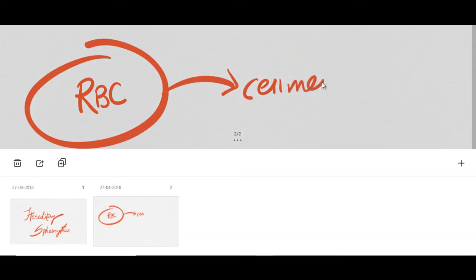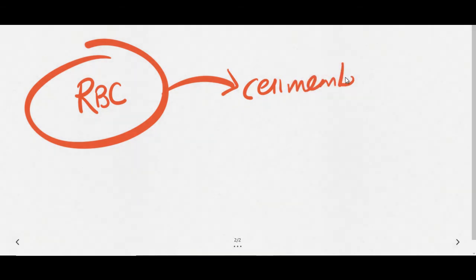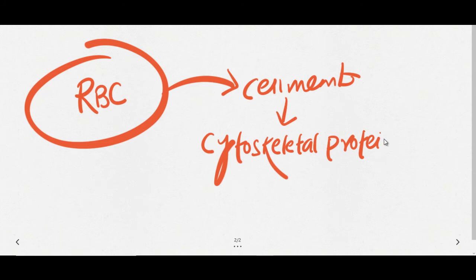RBCs have a cell membrane with a cytoskeleton structure made of proteins that form the framework of this membrane. These cytoskeleton proteins are involved in hereditary spherocytosis. When these proteins are defective, it results in loss of cell membrane.